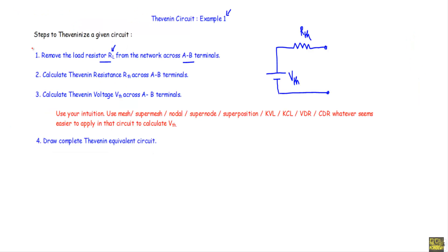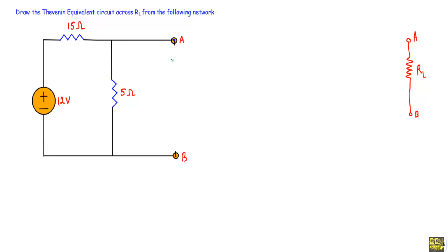We are done with step one. Next, step two: calculate the Thevenin resistance Rth across the A and B terminals. While calculating Rth, if there are any voltage sources in the circuit we will replace them with short circuits, and if there are any current sources we will replace them with open circuits. We then calculate Rth with respect to the A and B terminals.